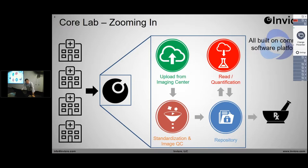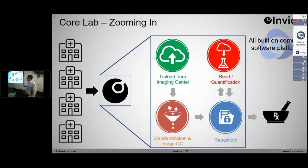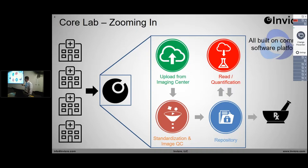If we zoom in on this area where we have data coming from multiple locations back into NVCRO's CoreLab, there are several pieces to that chain. Data will be uploaded from the imaging site, flow into some sort of standardization and image QC — where the data are looked at very closely to make sure all the information is accurate, the meta information, that the image data look reasonable. They'll then be enrolled into the repository. All of these functions are built on the IPACS as a common software platform — that's the bedrock on which we build everything.